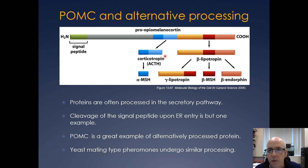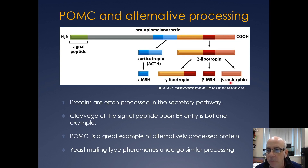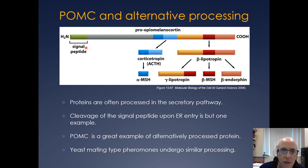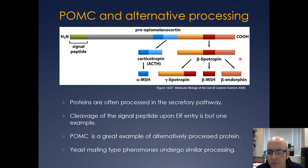One of the classic ones is pro-opiomelanocortin, which is encoded by the POMC gene. This will actually get processed to produce different hormones: beta-endorphin, beta-MSH, gamma-lipotrophin, and alpha-MSH all sort of come from the POMC gene. As it travels through the secretory pathway, it's got the signal peptide, it'll get brought in, the signal peptide gets cleaved, and then the various proteins will get cleaved. We sort of saw this happening with insulin when we were talking about translocation and protein folding.